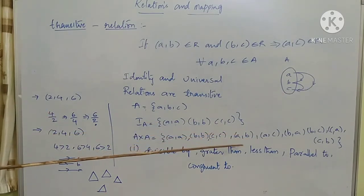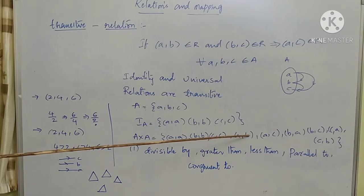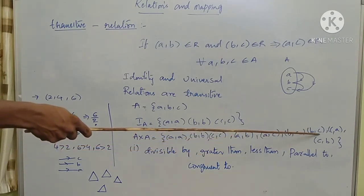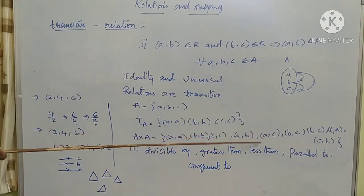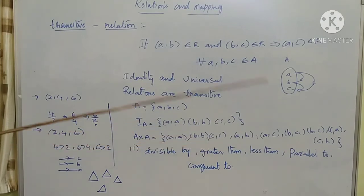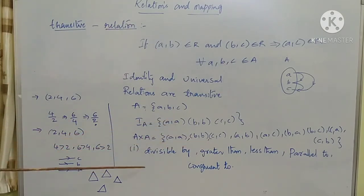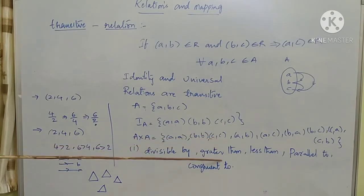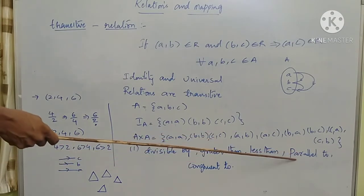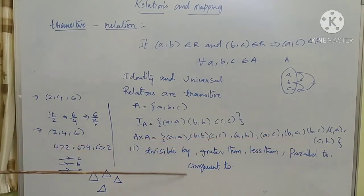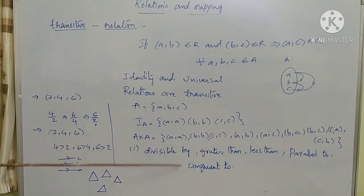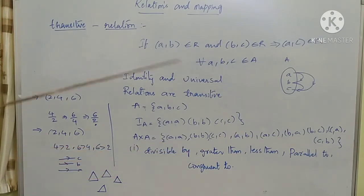If A to B and B to C is possible, then A belongs to C — this type of relation we call a transitive relation. Examples of transitive relations include: divisible by, greater than, less than, parallel to, and congruent to.